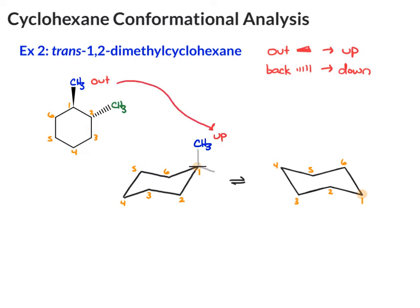The hydrogen is the down group. If you're having trouble seeing that, just draw a flat plane on that carbon and look at what's pointing above and below the plane. Since the methyl is the up group — out goes to up — the equatorial must be the hydrogen. You don't have to draw that in, but you can. Then on carbon 2, we have another methyl group. In this case it's back. On carbon 2, if you draw your axial, it's straight down because that's a down carbon. Your equatorial is up. The back group should end up down on that carbon. The other group is the hydrogen, which you don't have to draw in but you can. So here's our first chair.